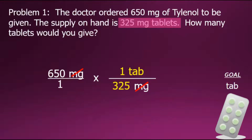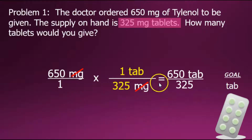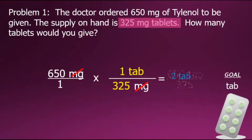To multiply fractions together, we multiply numerators for the new numerator and multiply denominators together for the new denominator. Here we have our answer, but in simplified form, the last step will be to divide the numerator, 650, by the denominator, 325. The unit for this answer is in tablets, which was our goal, and when we do the division, the quotient gives us a final answer of two tablets.